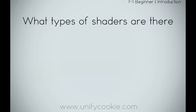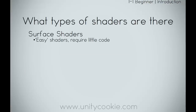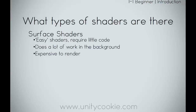Let's take a look at what types of shaders there are. First, surface shaders — these are what we call easy shaders. They require very little code, often only about 40 lines, but they do a lot of work in the background. When you look at the compiled code it's more like 10,000 lines, and these are very expensive to render. We have already done a series on how to write surface shaders. They look nice, but they're just not very optimised — they can kill the performance of your game.